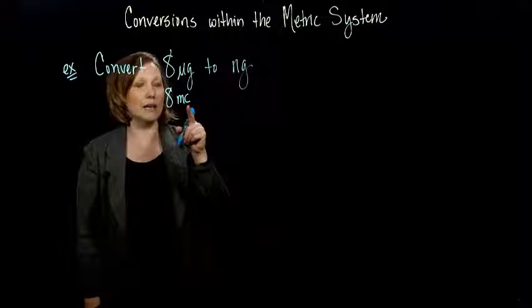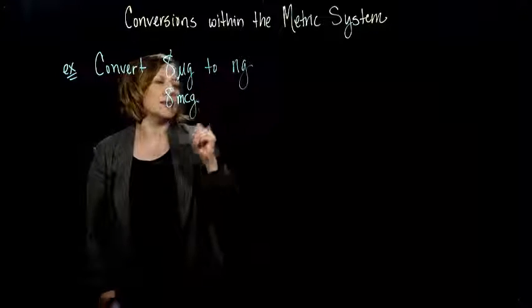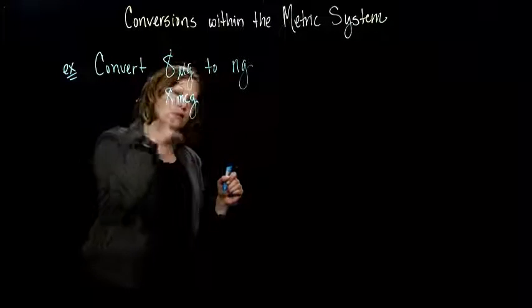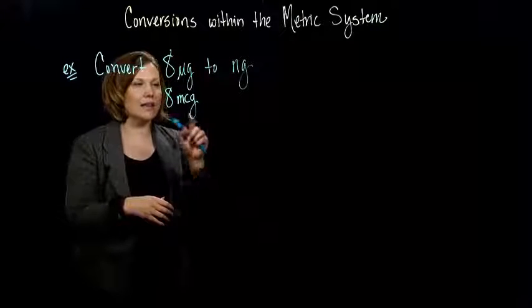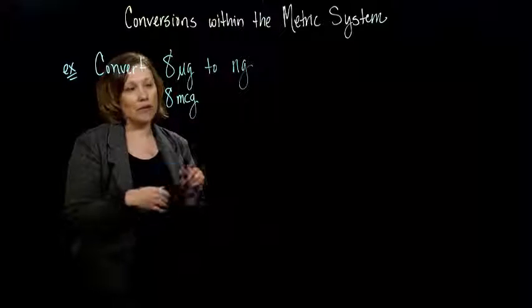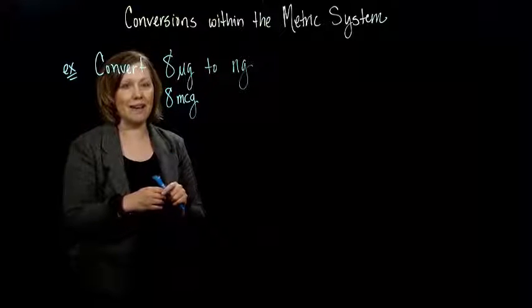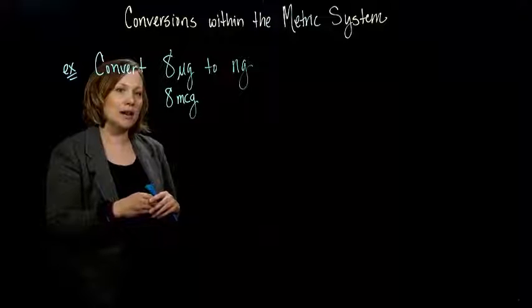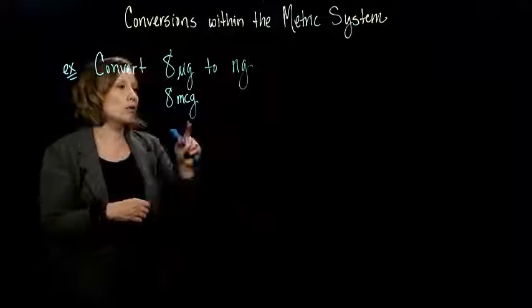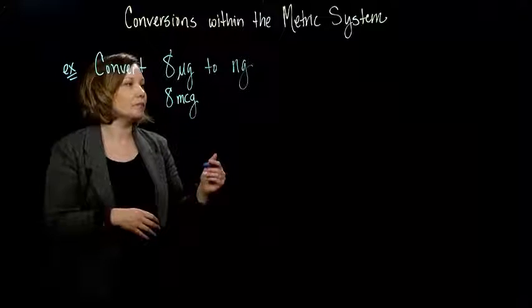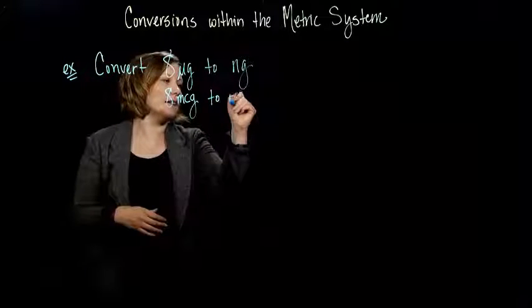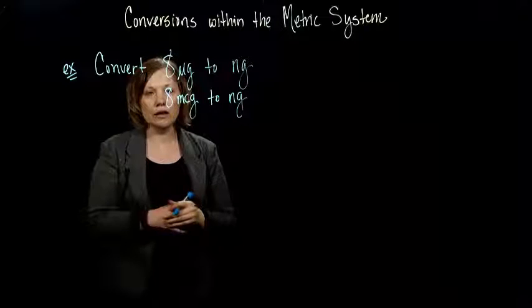Instead of a mu, two letters, M and C. And that's why we use the mu, because it's only one, usually we only use one letter for a prefix. Having three letters as a unit of measure is a little different. So you might see it written either way, either as mu or MC. But we want to convert that to nanograms.